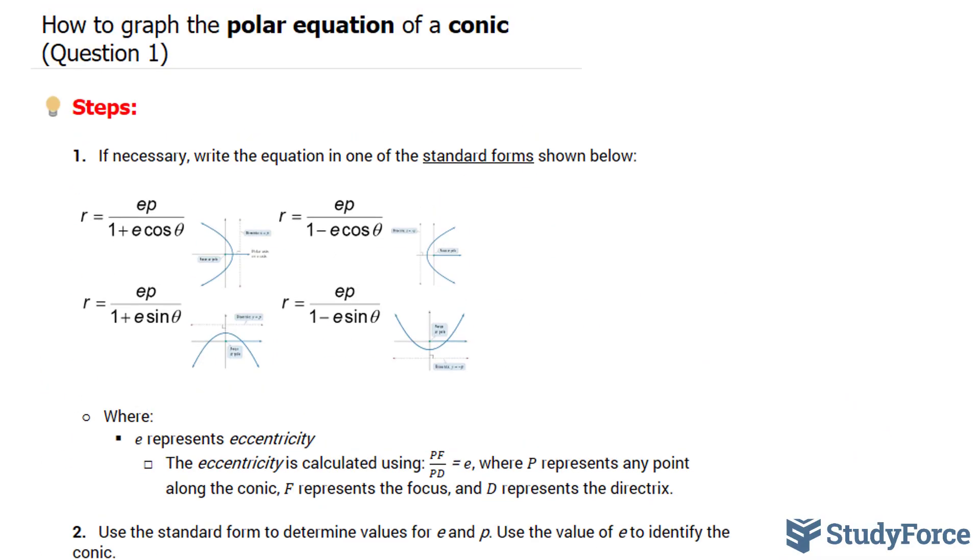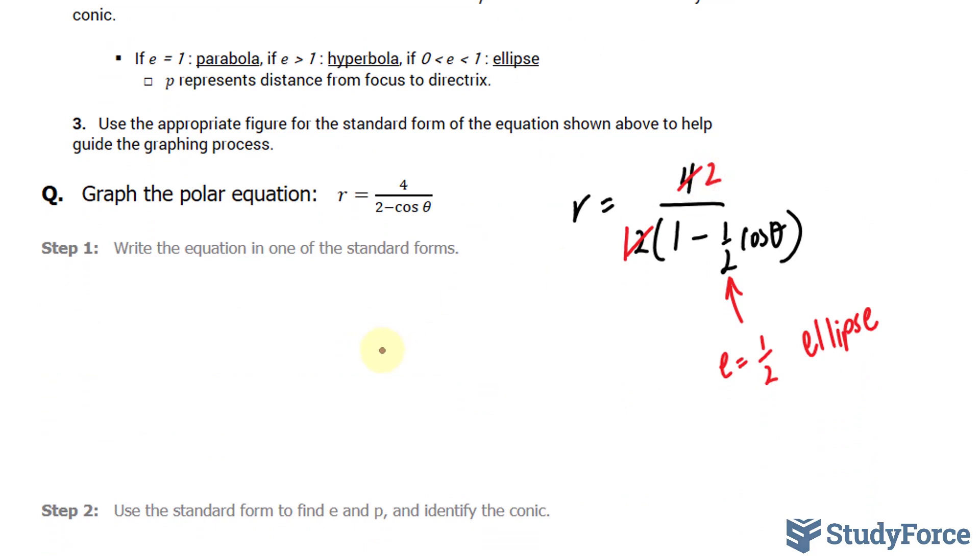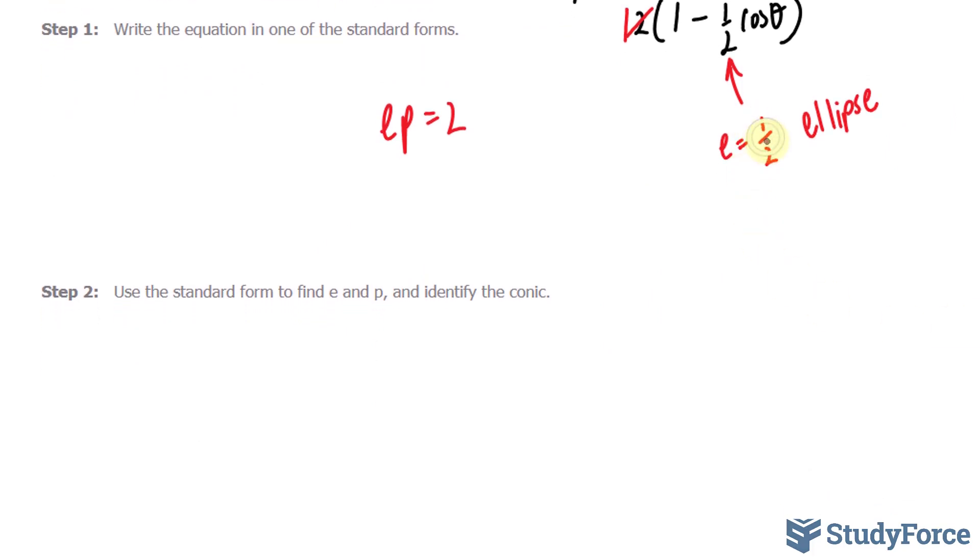Taking a look at the standard equations again, we had e p in the numerator, and in our case, that's equal to 2. e p equals 2. This is for step number 2, of course. I'll substitute 1 over 2 into e, and now I can solve for p. I'll multiply both sides by 2, and I end up with p equals 4.